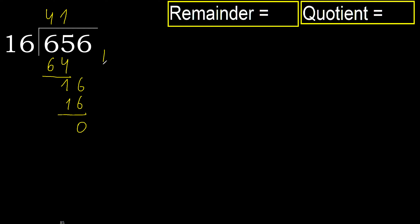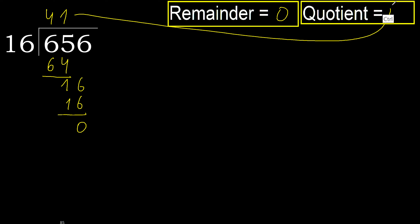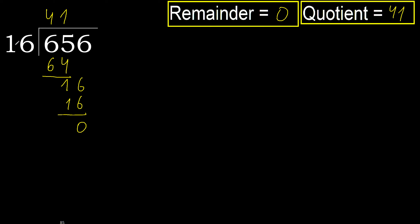Next. There is no number, therefore finish it. Ok, 656 divided by 16 is 41.